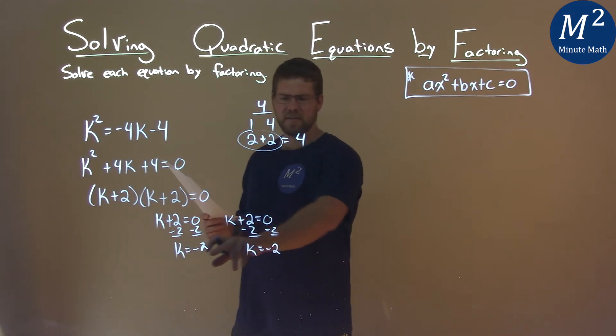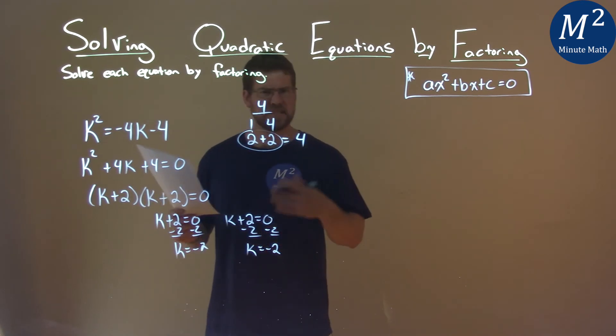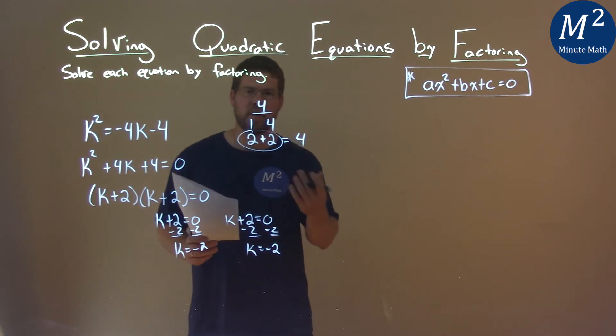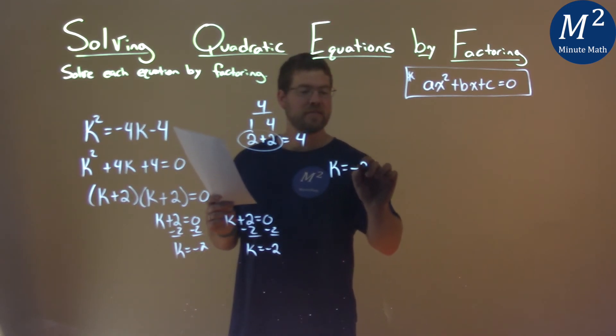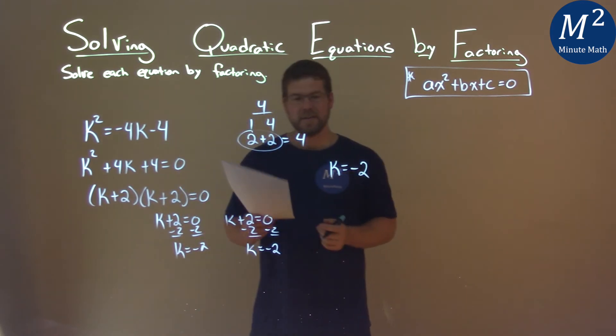Well, notice we have negative 2 written twice. It's the same number. We don't normally write that as a final answer. So our final answer, we just have to write it once. And we say k equals negative 2. And that is our final answer.